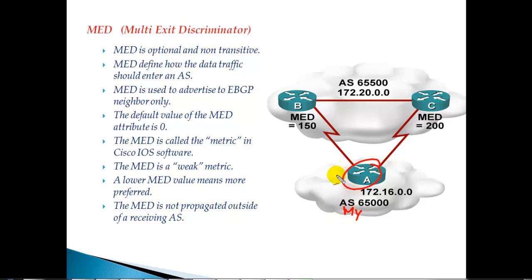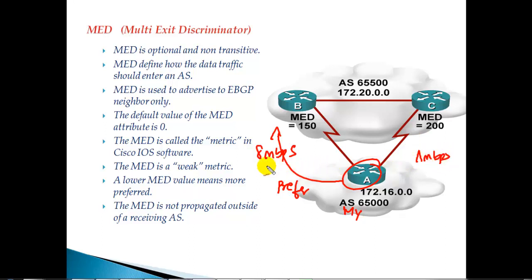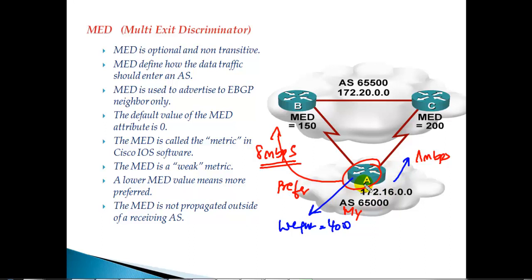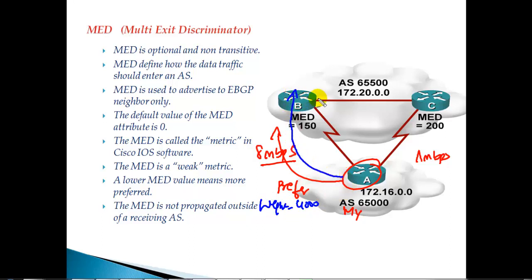In my scenario, I want to ensure that all traffic leaving my autonomous system should be preferred over a specific link — maybe this is your high-speed 8 Mbps link and the other is just a 1 Mbps link. To make this possible, I can go to this router and apply a higher weight on this side, or I can also use the local preference attribute. Both attributes will satisfy that requirement. But now, what about the return traffic?